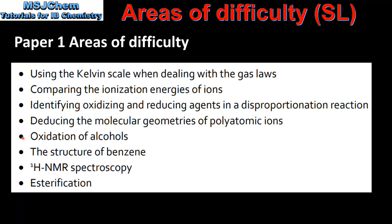Next we have oxidation of alcohols. The product of oxidation depends on whether the alcohol is primary, secondary, or tertiary — tertiary alcohols don't undergo oxidation. Primary alcohols can be oxidized to either aldehydes or carboxylic acids. Secondary alcohols can be oxidized to form ketones. This comes up quite often so make sure you're familiar with the products and also the oxidizing agents, for example acidified potassium dichromate.